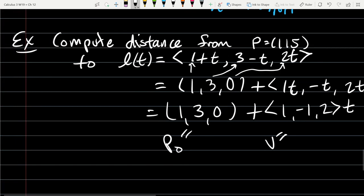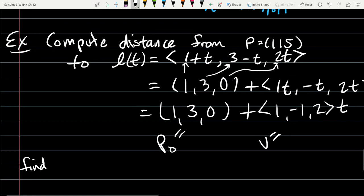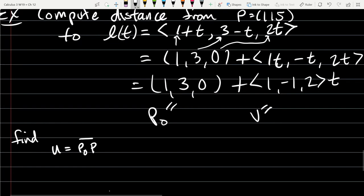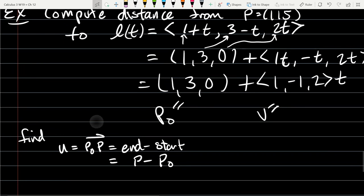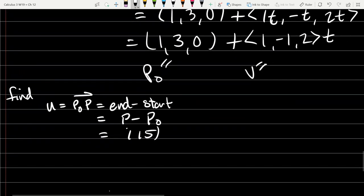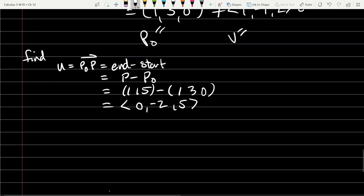All we need to do is get the vector P₀P. I'll just call it U. So it's always end minus start. P is (1,1,5) minus P₀ is (1,3,0). Subtraction: one minus one is zero, one minus three is negative two, five minus zero is five. So that's the vector U, and I'm just going to quickly redraw what's above.